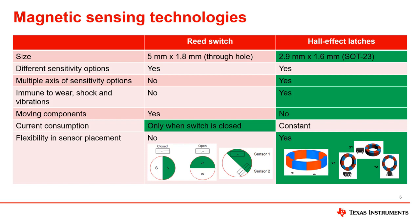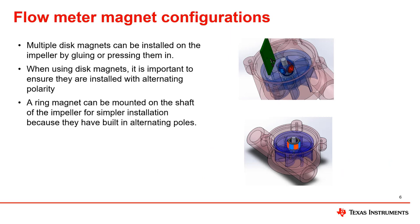For 2D latches, choose between XZ, ZY, or YZ axis combinations to maximize flexibility of magnet and sensor placement. There are multiple magnet configurations for flow metering applications that provide flexibility in sensor placement.